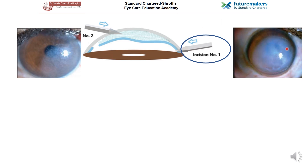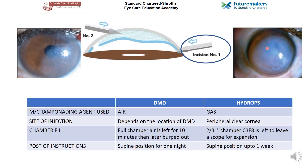The second indication is acute corneal hydrops. It is a condition characterized by stromal edema due to leakage of aqueous through a tear in the Descemet's membrane. It occurs in corneal ectasias like keratoconus, pellucid marginal degeneration, and post-LASIK. The problem in hydrops is the formation of intrastromal clefts which need longer duration of tamponade compared to DMD to prevent aqueous penetration into the stroma.